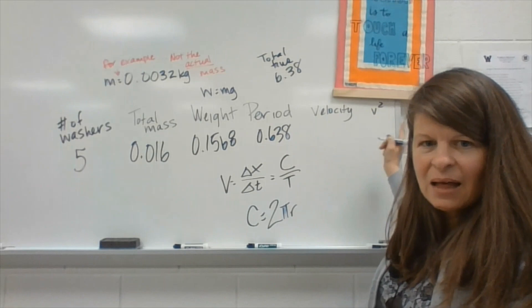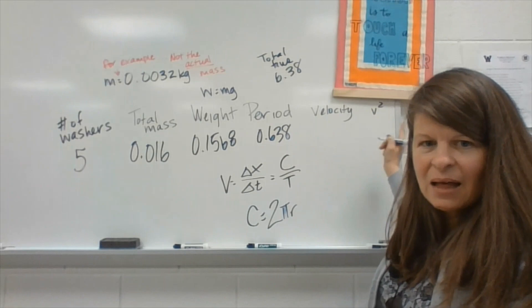The last column is v squared. If you have velocity, how do you get velocity squared? You just square that column. So that should help you with your calculations.